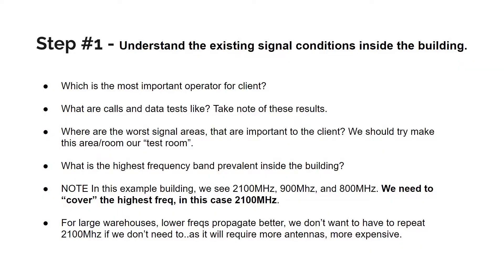You're going to talk to the client and find out which operator is most important. He might say Post Mobile — that's the important one, though he wants the others as well. That's useful for prioritizing which operator we point the outdoor antenna at, because there's always a compromise. Inside the building, you check your phones, make a few quick calls, and identify where reception is worst — for example, Post Mobile has terrible reception.